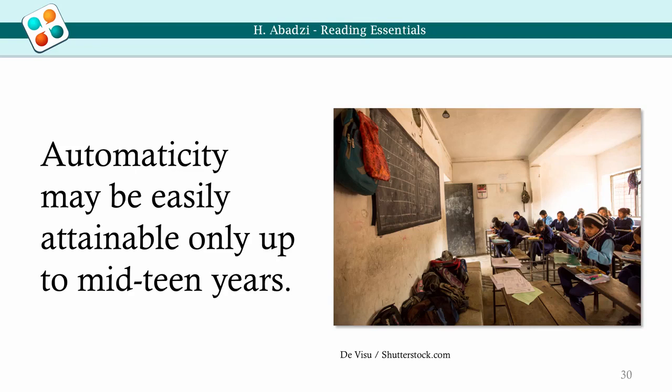Learning to read becomes difficult after age 18. Some circuits related to the visual word form area may have a sensitive period and decline in function during mid-adolescence. Adult participants and graduates of literacy courses remain halting readers who process little text with difficulty. This is one of many reasons why automaticity must be attained in childhood.